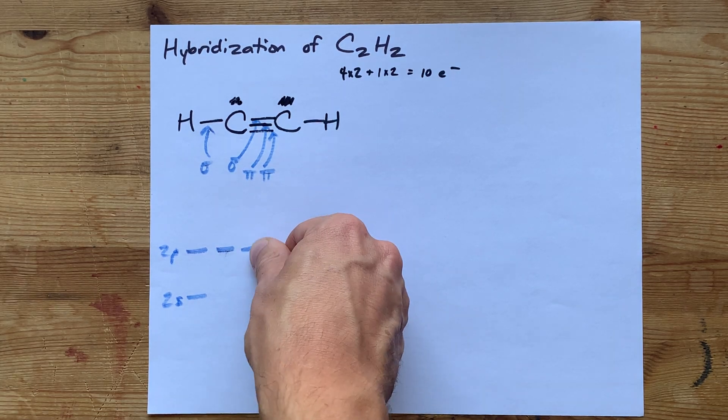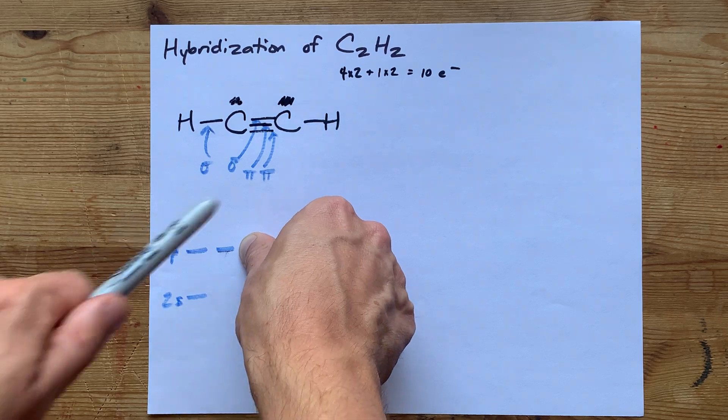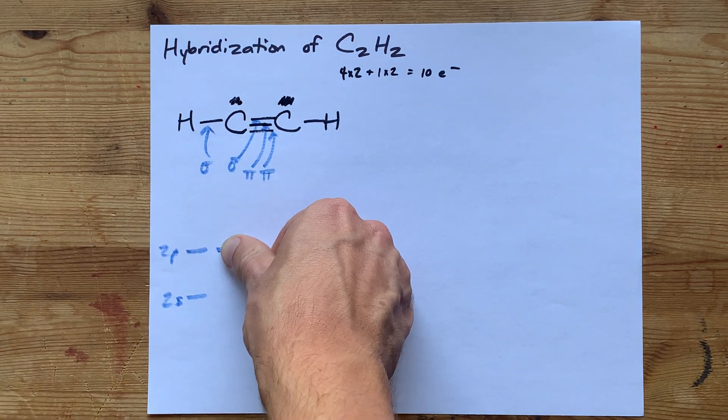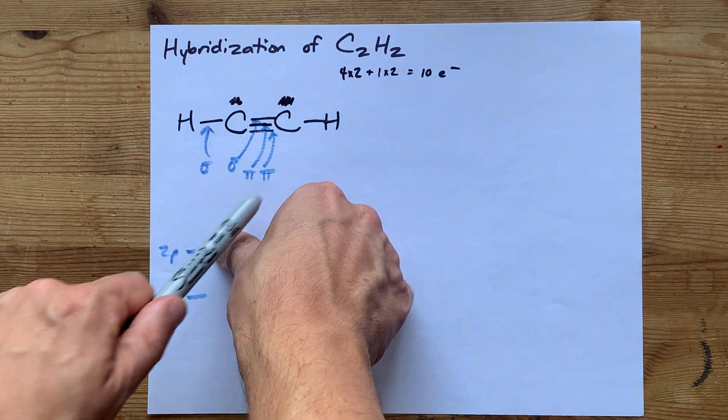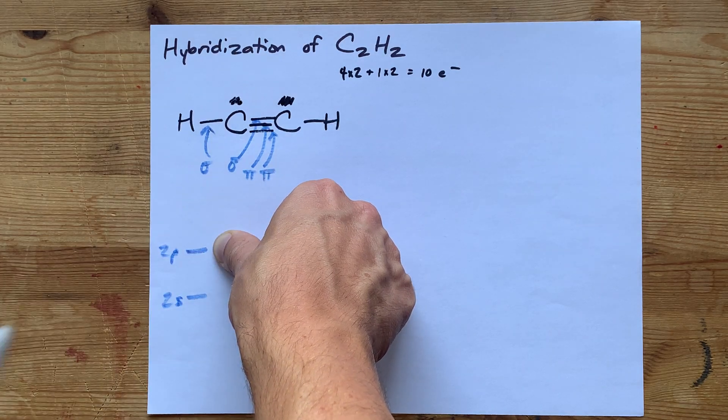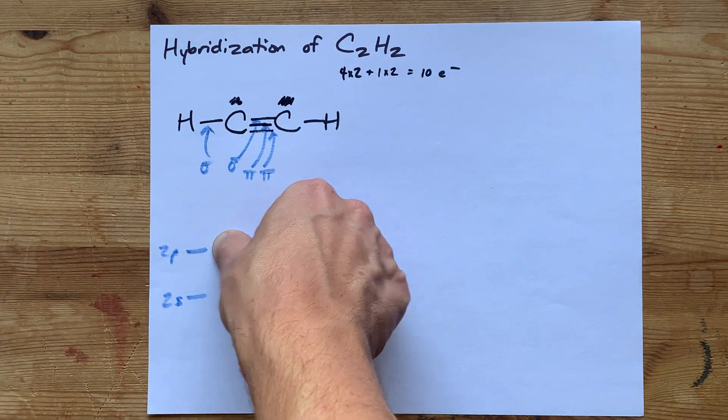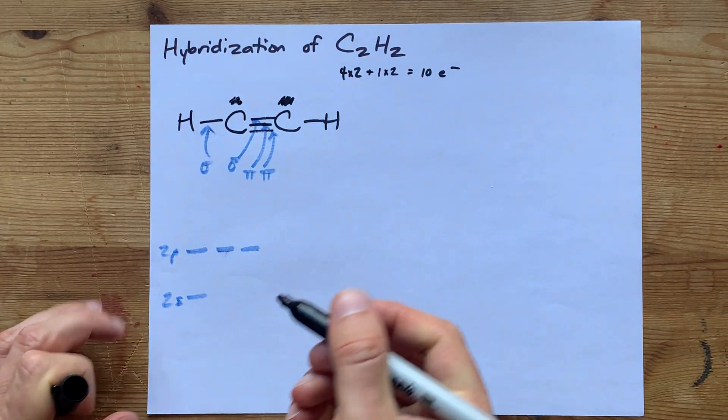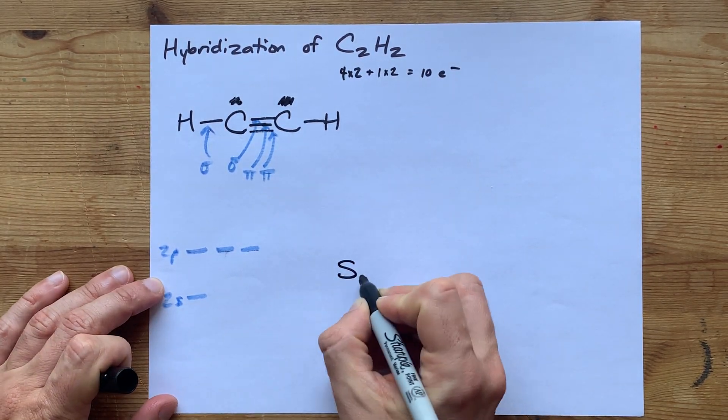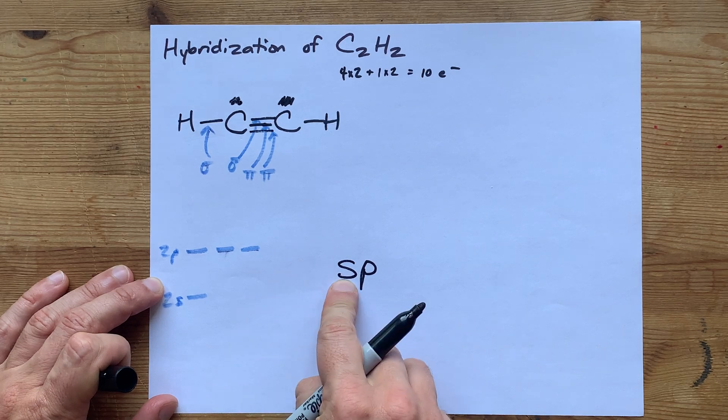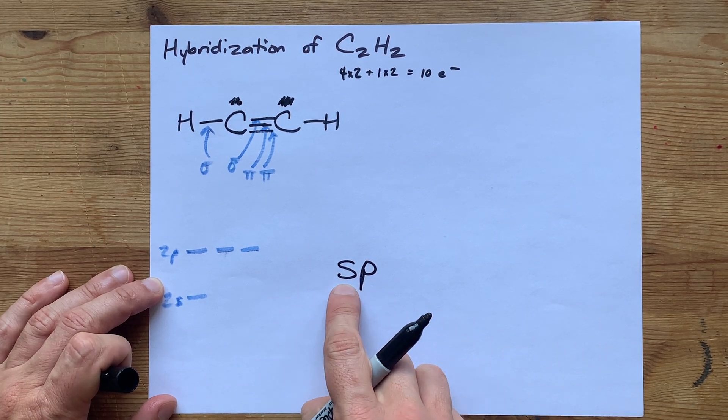This one here is getting left over so that we can make a pi bond. This one's getting left over so we can make the other pi bond, which means we have one s and one p orbital that can hybridize. Therefore, the hybridization of those carbons is sp. One s and one p.